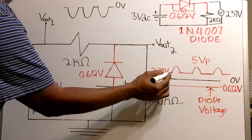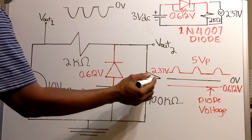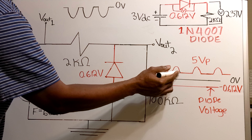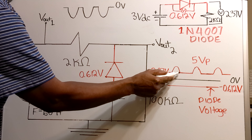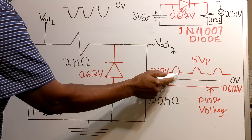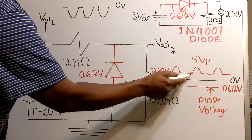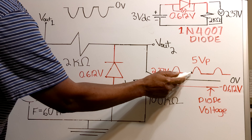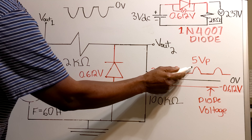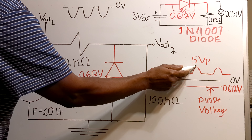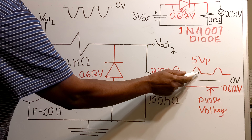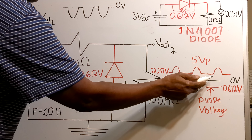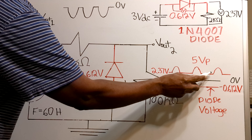The diode goes into reverse bias at exactly 2.37 volts. It rises to a peak voltage of 5 volts, then comes back down to 2.37 volts. This area is where the signal goes negative, all the way down to the negative peak, then comes back up. At plus 2.37 volts it begins once again to go into reverse bias, rises to the 5 volt peak, then drops back down to 2.37 volts, goes fully negative, and comes back up to 2.37 volts before going into reverse bias again.